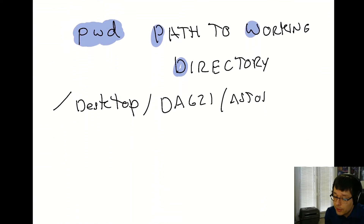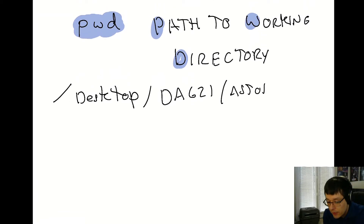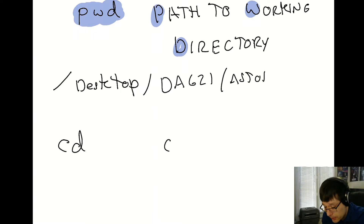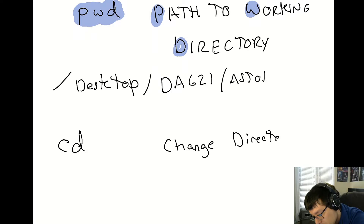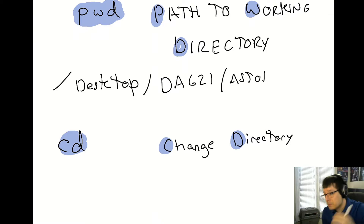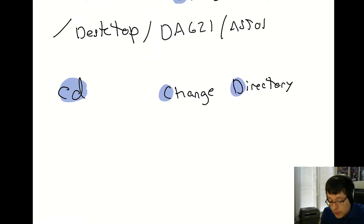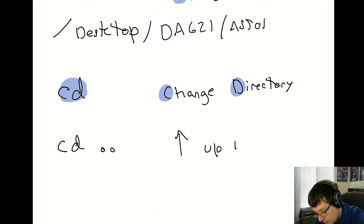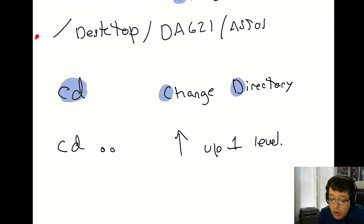If you want to move to a different directory, you can use the 'cd' command — which stands for 'change directory'. To go up one directory, type 'cd ..' (cd followed by two dots). If you're currently in a subfolder, that moves you up one level. If you're already at the root, it won't do anything.